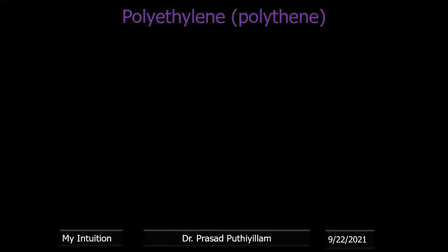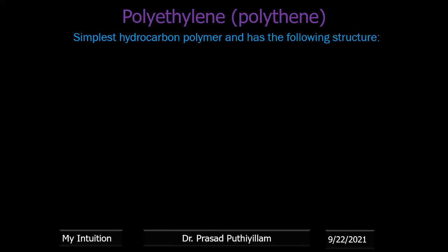First one — polyethylene, also known as polyethene. It is the simplest hydrocarbon polymer. It is a long chain polymer, so we represent only the repeating unit: CH2-CH2 repeated n times. That is the simplest representation of polyethylene.